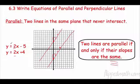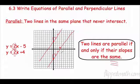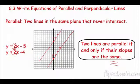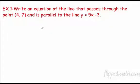Two lines are parallel if and only if their slopes are the same. So you can tell right away — if I look at two lines and my slope for this one is 2 and my slope for that one is 2, I didn't even have to graph it. I know because the slopes are the same, therefore they're parallel lines.